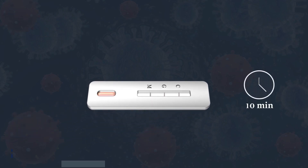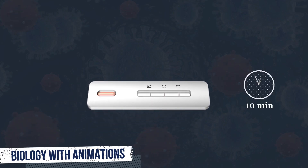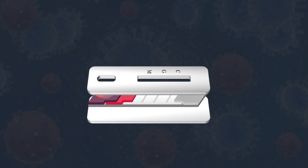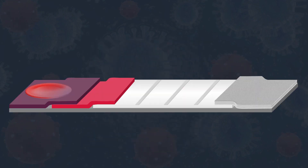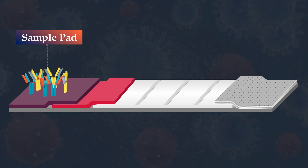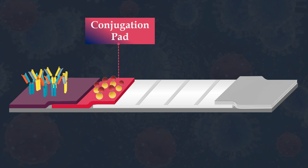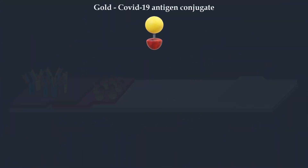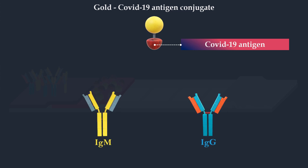The test kit is a qualitative lateral flow immunochromatographic assay. The test device contains a sample pad, where the combined sample flows down, and a conjugation pad, which contains gold COVID-19 antigen conjugate. The antigen will bind to the anti-SARS-CoV-2 antibodies in the sample. Two different antigens can be used — one with affinity to IgM and a second with affinity to IgG antibodies.